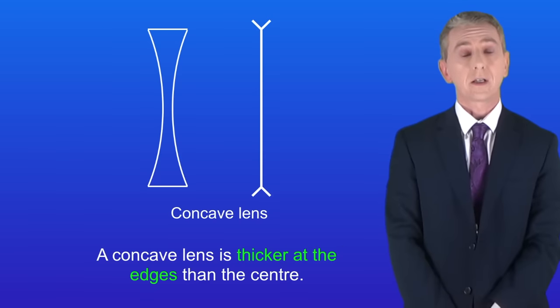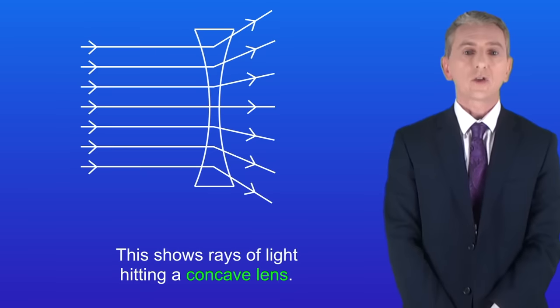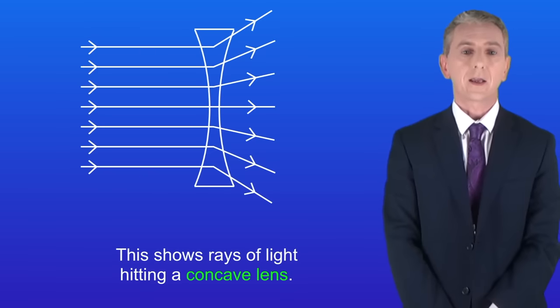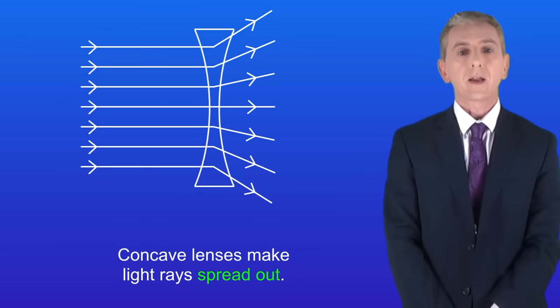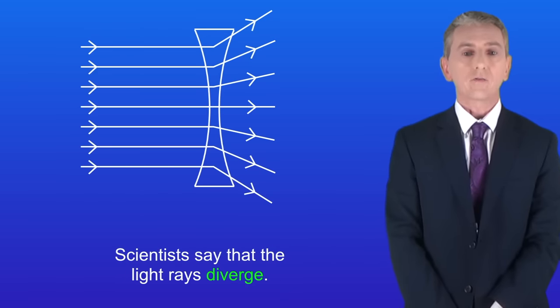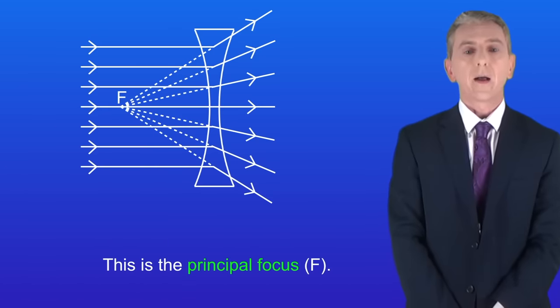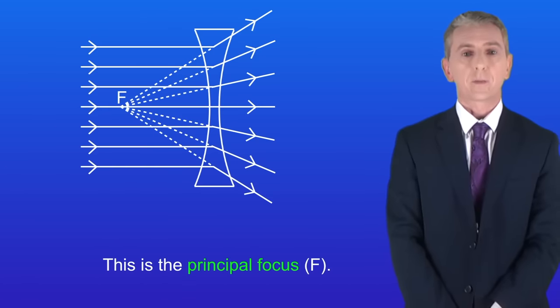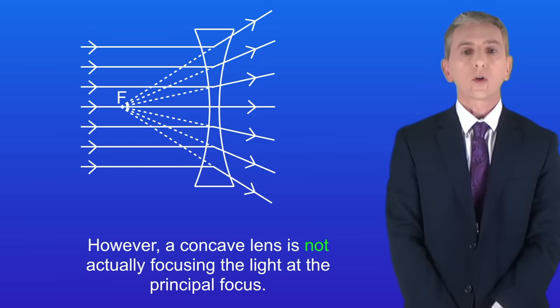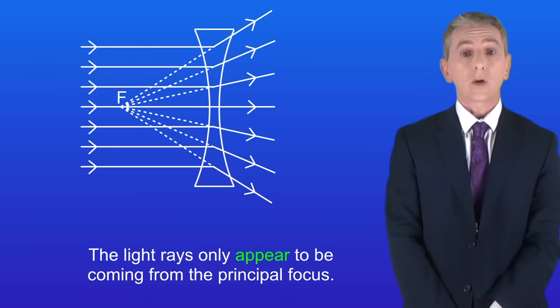Now concave lenses are very different to convex lenses. I'm showing you here rays of light hitting a concave lens. Concave lenses make light rays spread out. Scientists say that the light rays diverge. If we plot the lines behind the lens we can see that they come to a point, and this is the principal focus F. Now it's important to understand that a concave lens is not actually focusing the light at the principal focus. The light rays only appear to be coming from the principal focus.